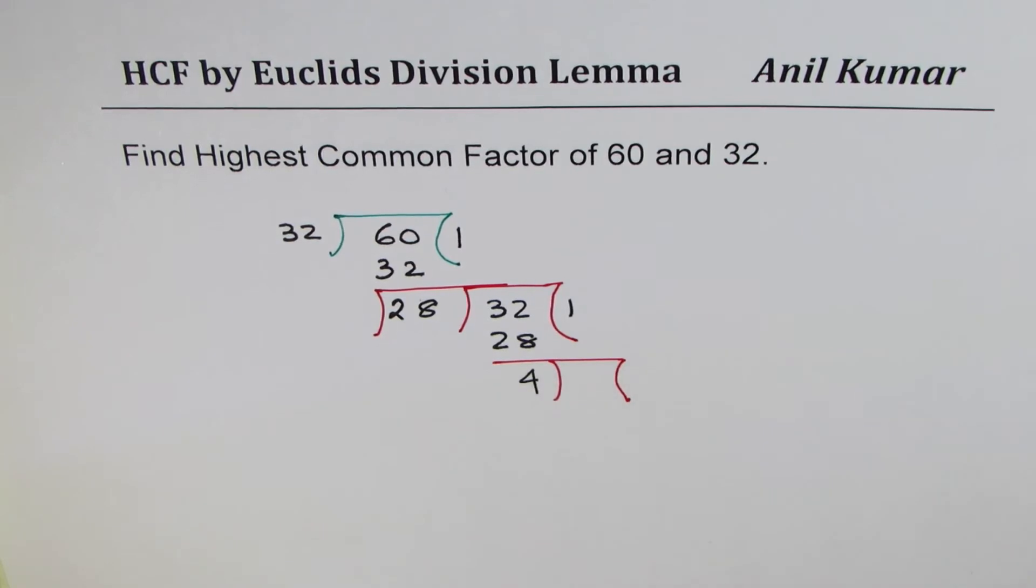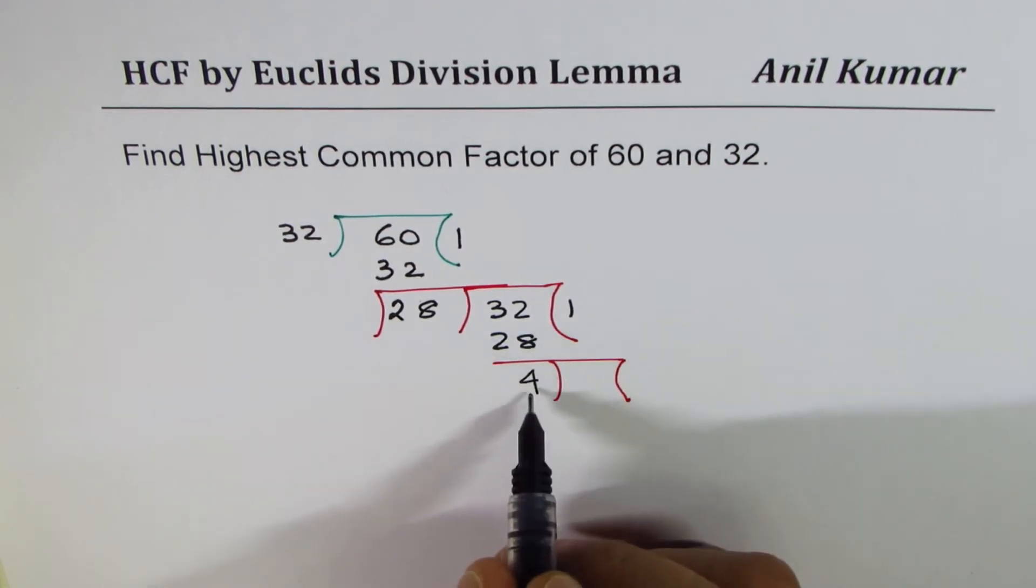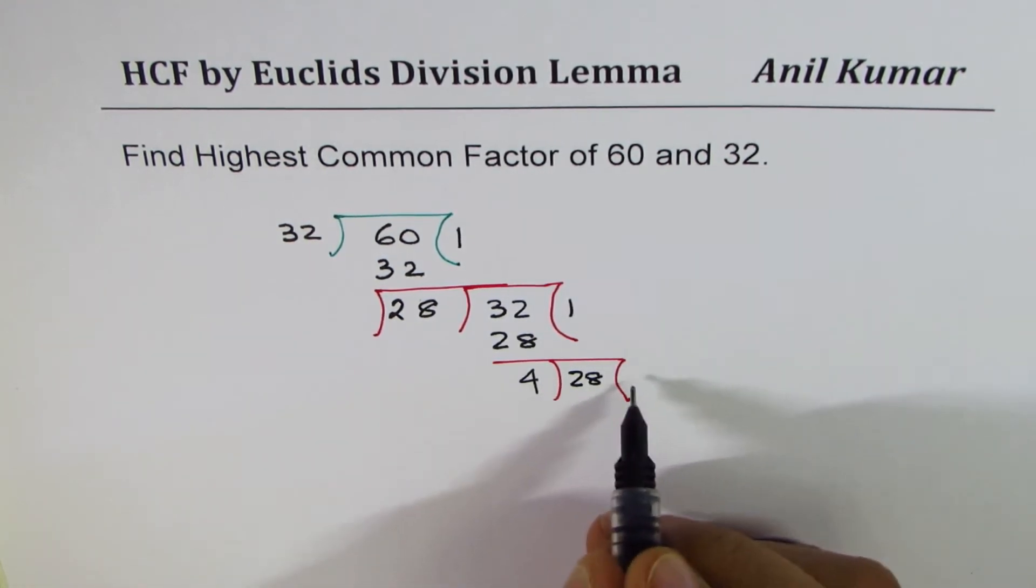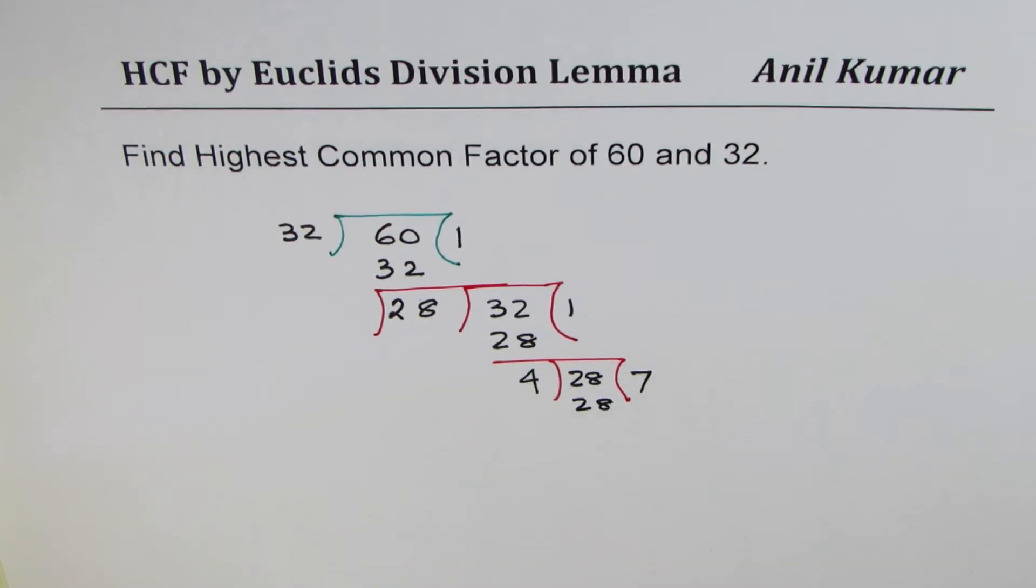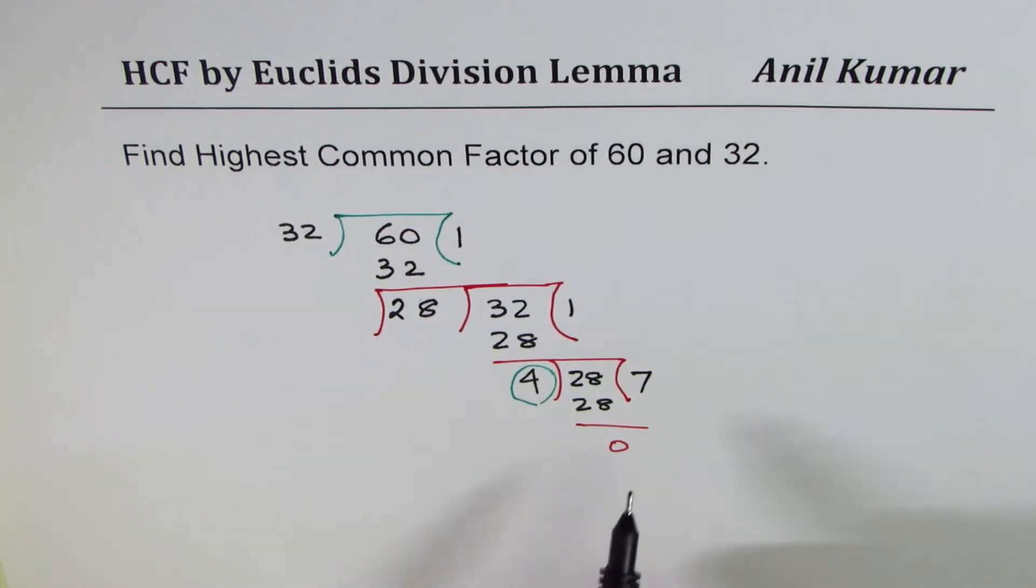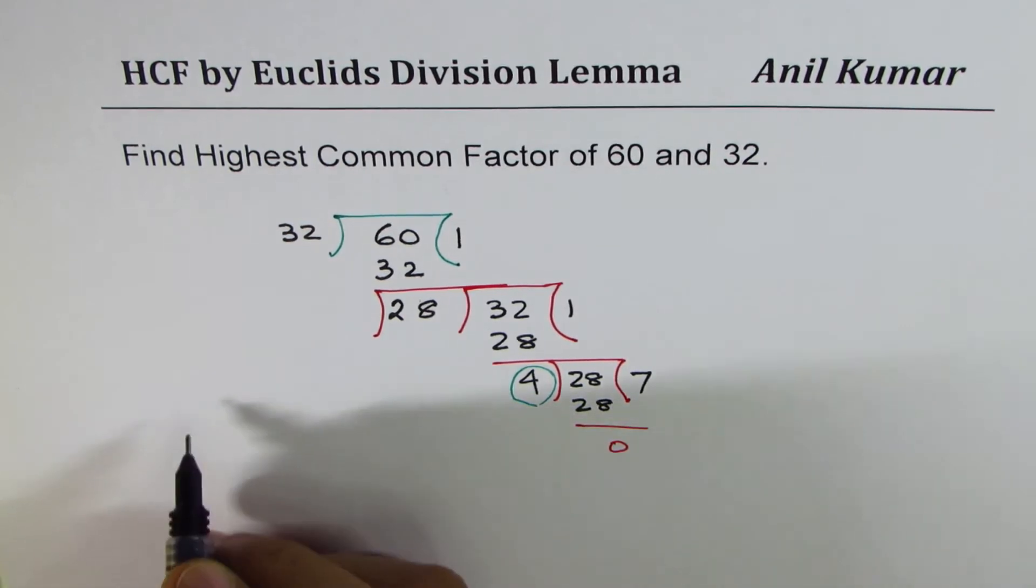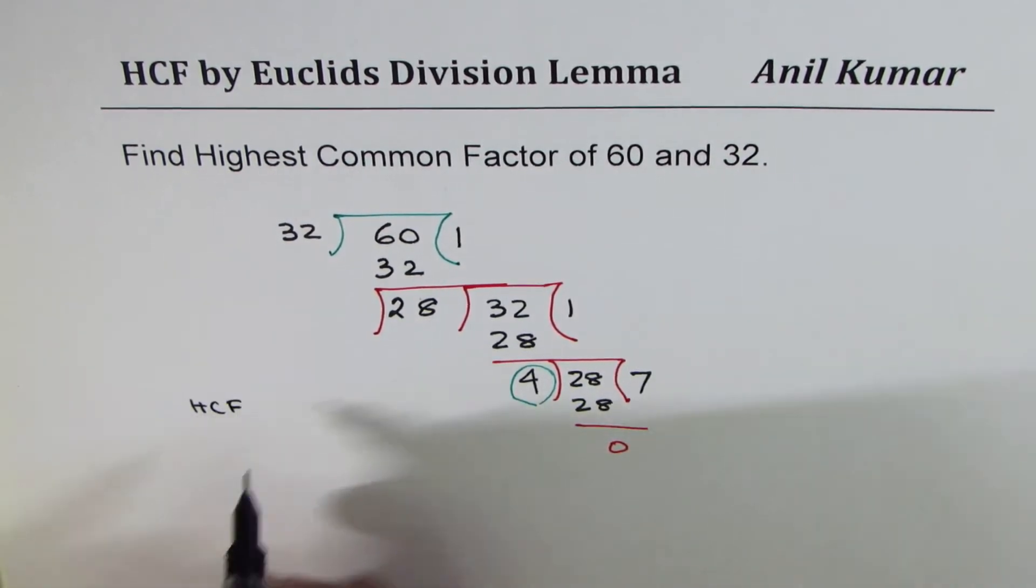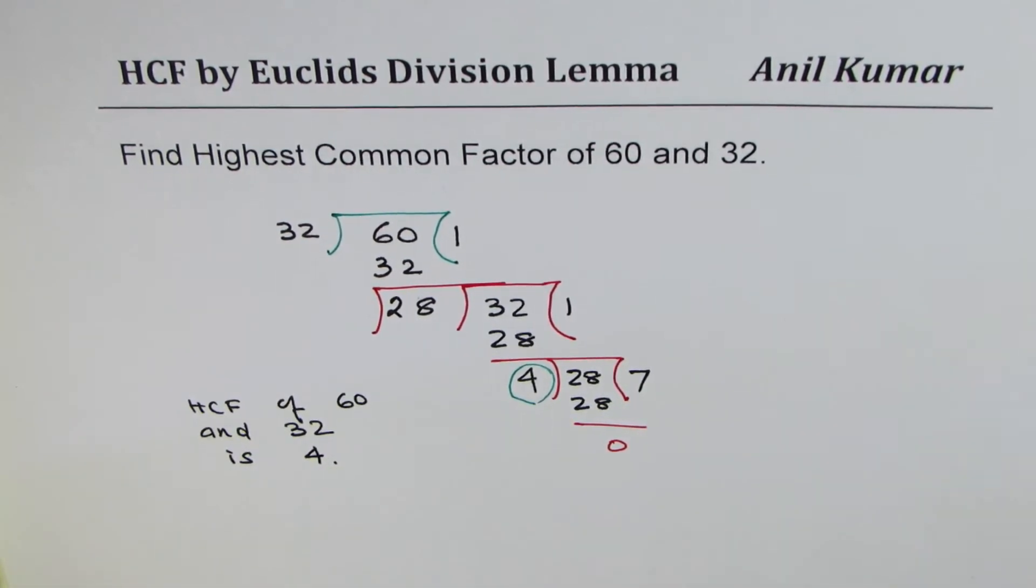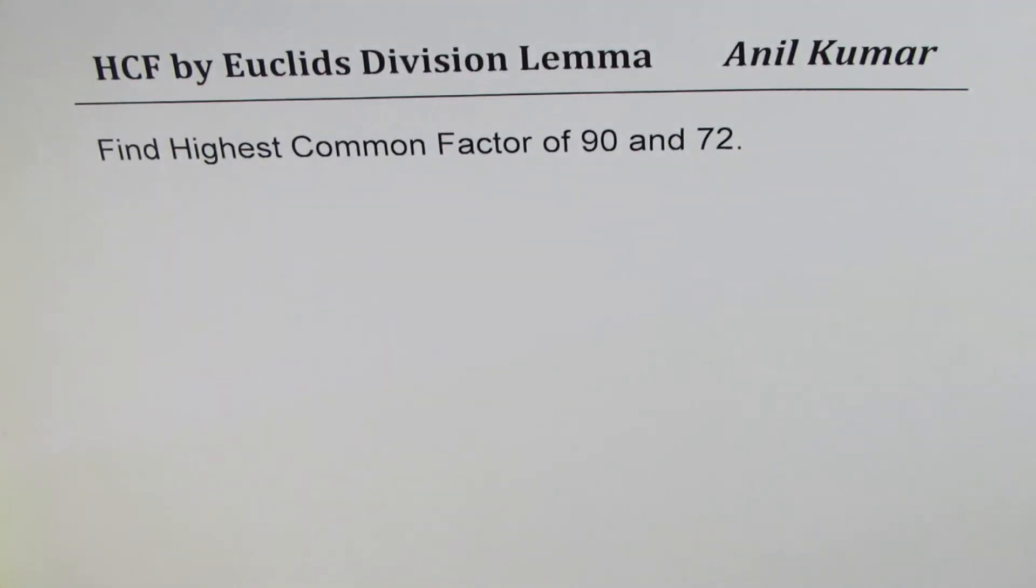That's a repeated division in which we divide the previous divisor by the remainder. 7 times 4 is 28, and the remainder is 0. Ultimately, it was 4, the divisor, which gave us 0 as the remainder. Therefore, the HCF or greatest common factor of 60 and 32 is 4. I hope the process is straightforward and clear.